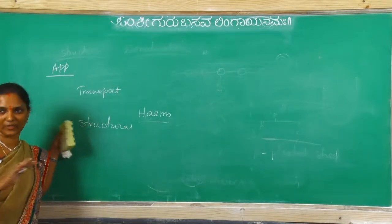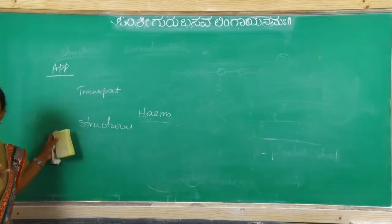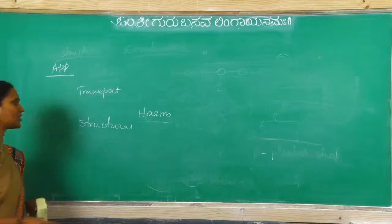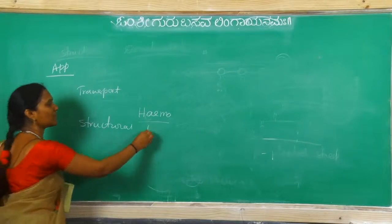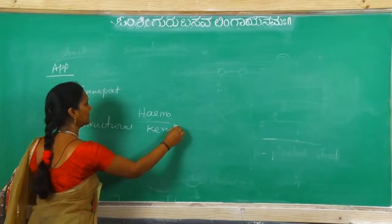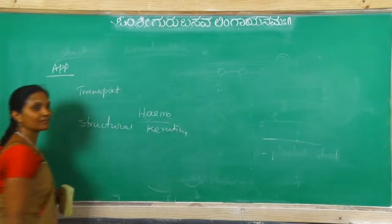Structural proteins protect the organs and give one structure to them. That is the structural protein. Example for this: keratin.